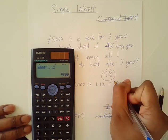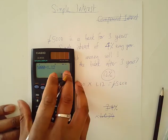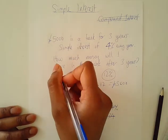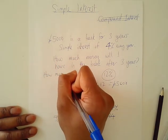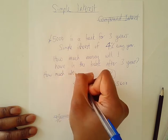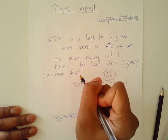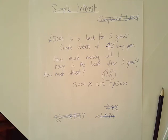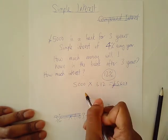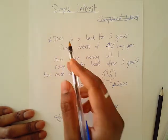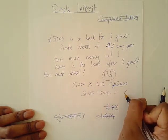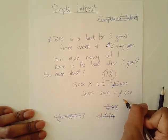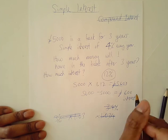Five thousand six hundred pounds after three years. But the question was asking how much interest I've earned over the period of three years. I'll do five thousand six hundred minus the five thousand that I started off with — so I've made six hundred pounds interest over the period of three years.